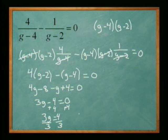Now we need to divide both sides by three to get g by itself, so g equals four thirds.